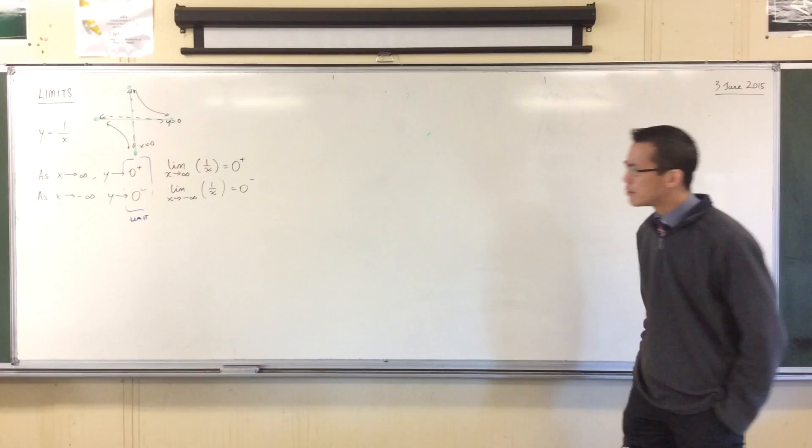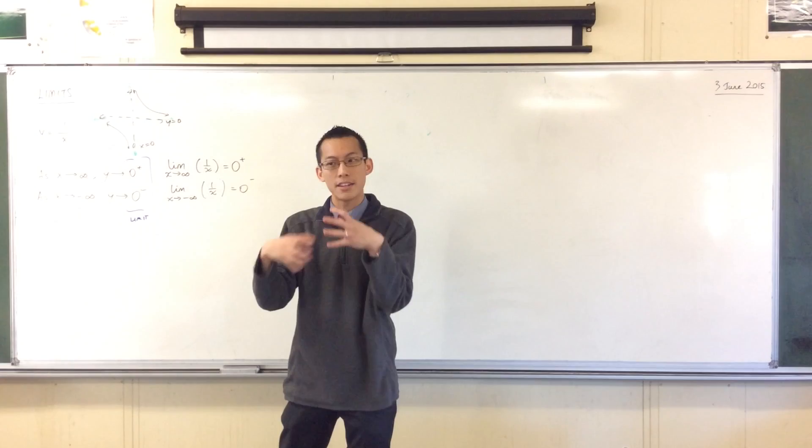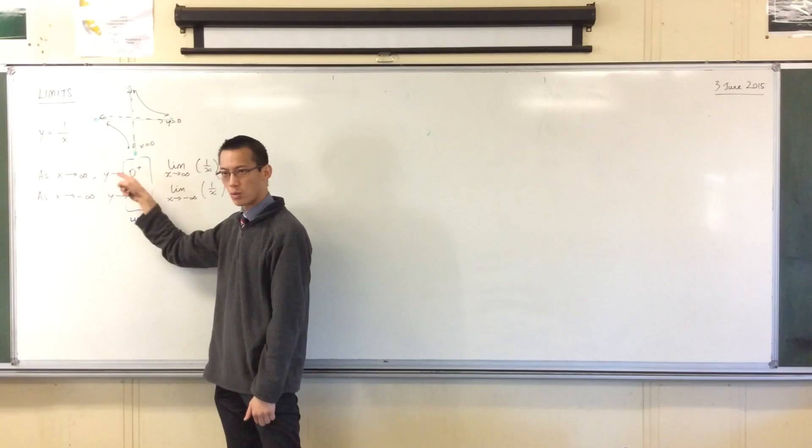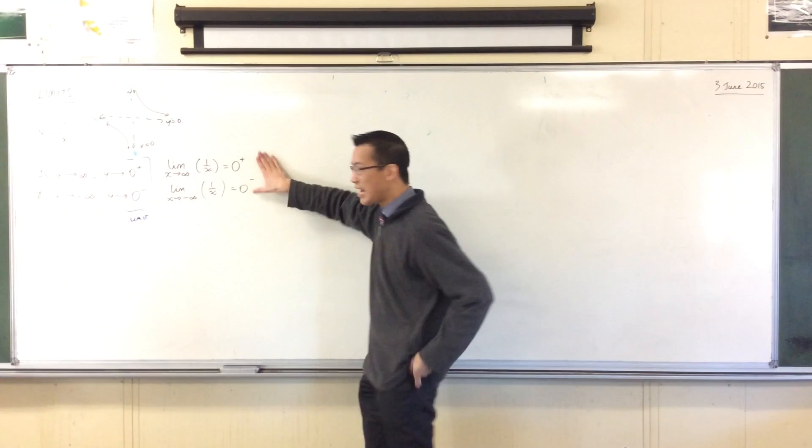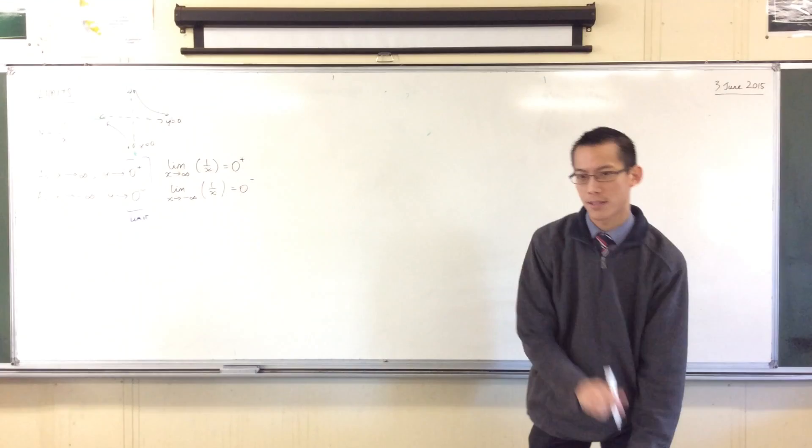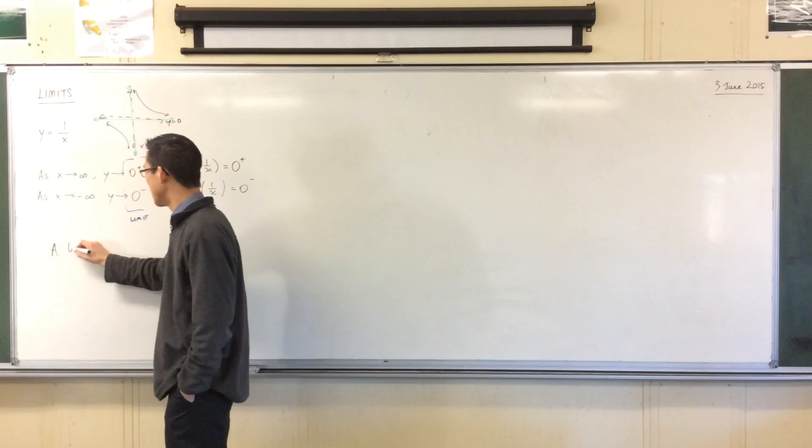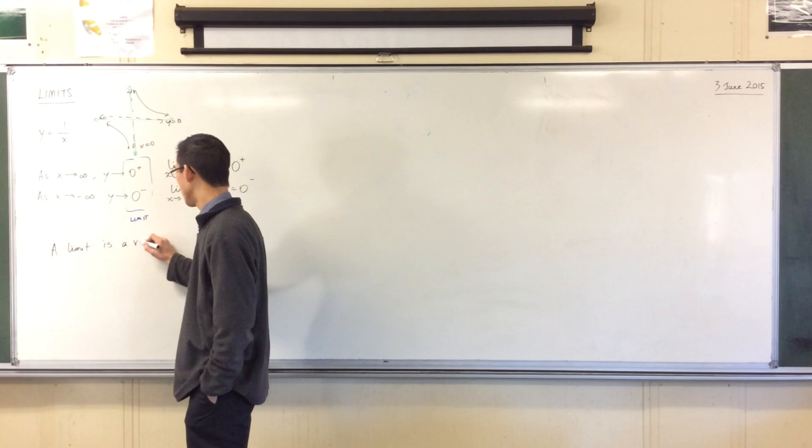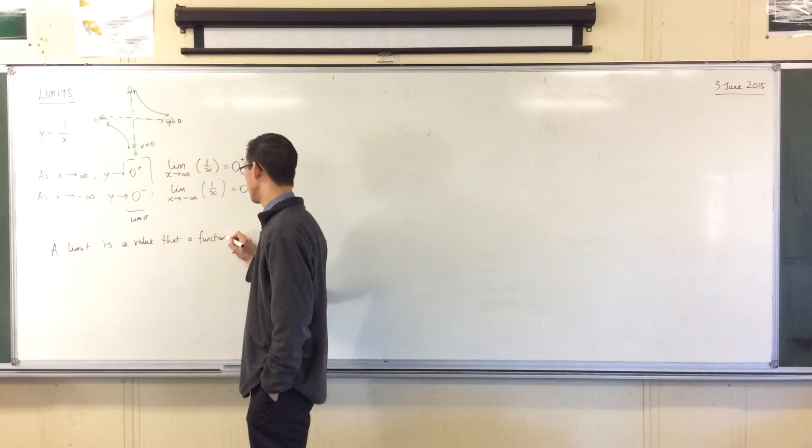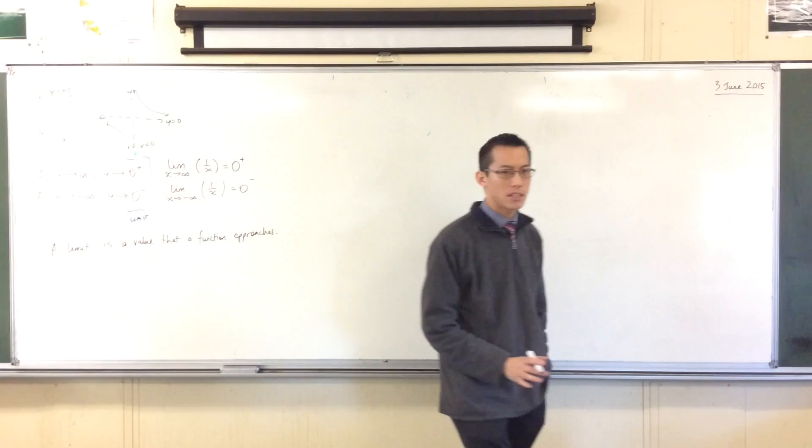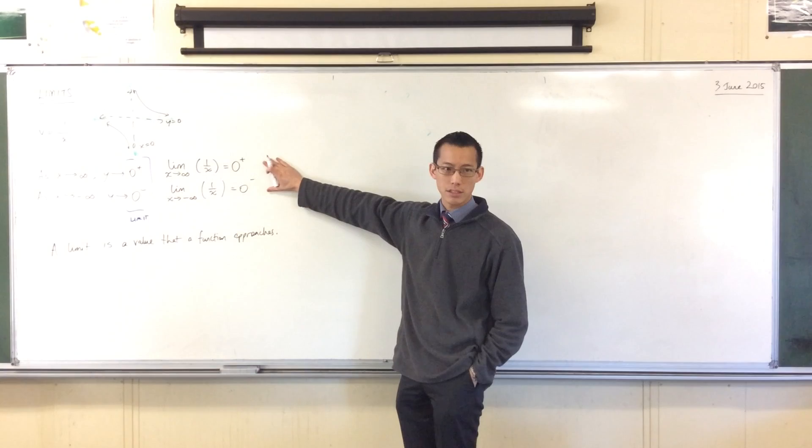Now, I'm introducing this because asymptotes are the first place where we want to understand this idea of getting closer and closer and closer to something, but not getting there. So you can't say it equals in this context. You can only say it gets closer and closer and closer. But here I'm saying the thing that I'm getting closer and closer to is 0. So here's my first sort of casual definition of a limit. You can put a big box around this. A limit is a value that a function approaches. That's all you need to understand.